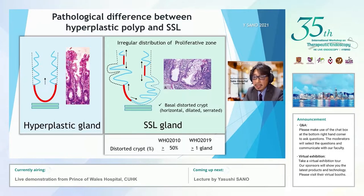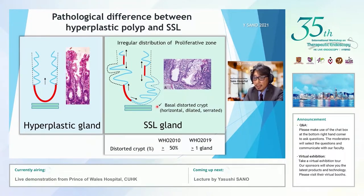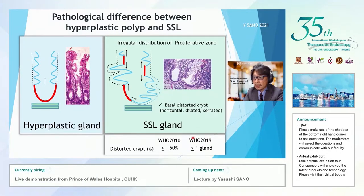The mutation of BRAF in microvascular hyperplastic polyp causes abnormality in the position of the proliferative zone. It shows that this causes dilatation of the glandular structure and inverted T-like shaped structural changes. In 2009-2010, WHO changed the pathological diagnosis criteria to diagnose the sessile serrated region. In the presence of even one glandular duct showing that feature, it should be diagnosed as the sessile serrated region.